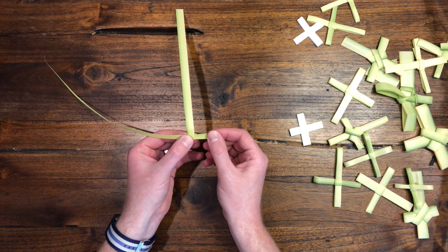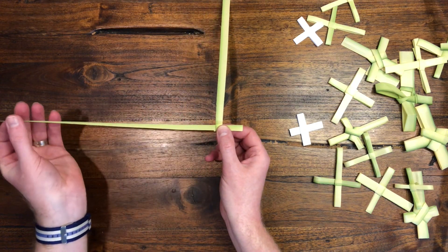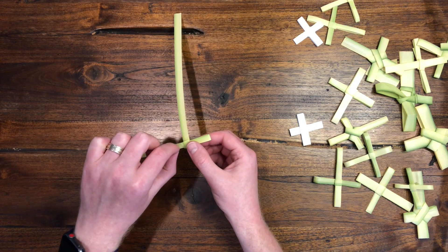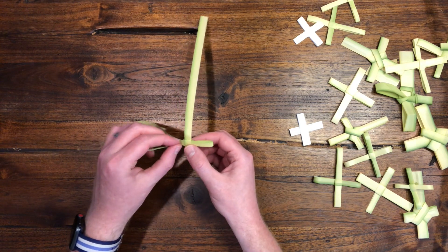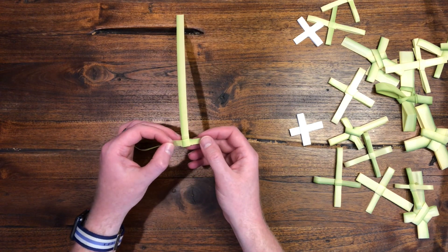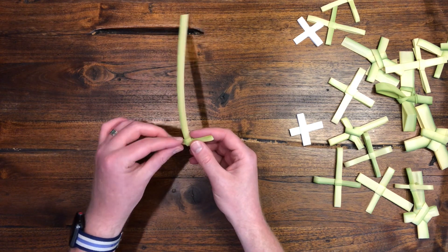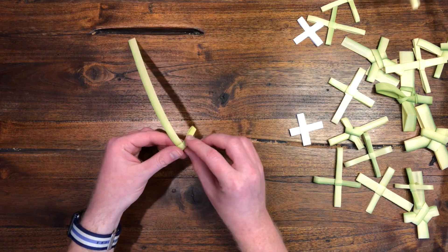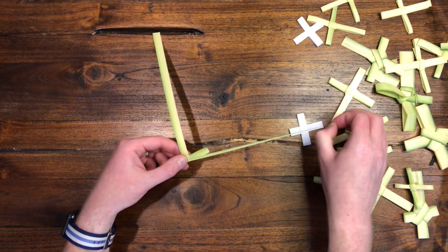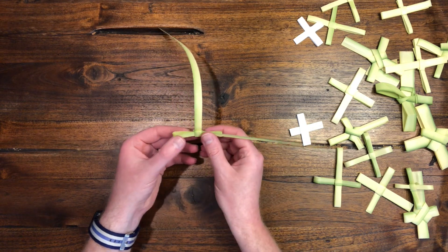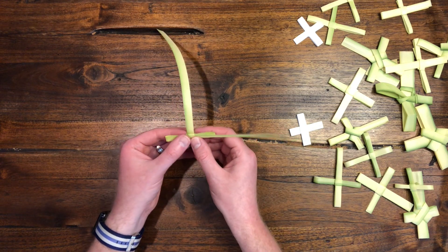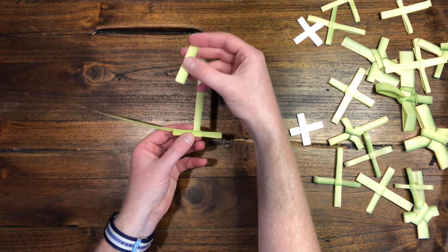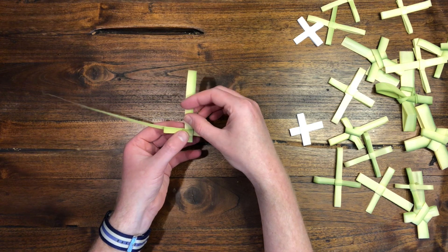Once you've got that first arm, you want to take the skinny part, fold it back through that same knot, and pull it gently to create the other arm of your cross. Keep them about even. Then, flip it over.